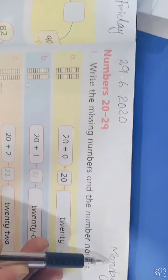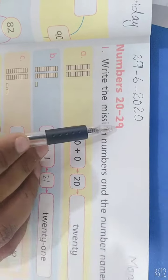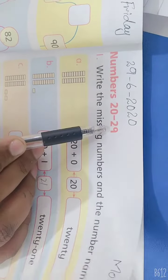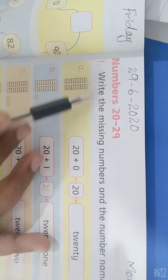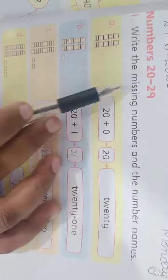Mention date and day. Numbers 20 to 29. Question number 1: Write the missing number and the number name.